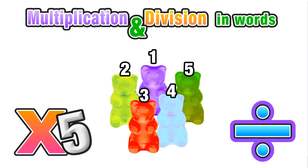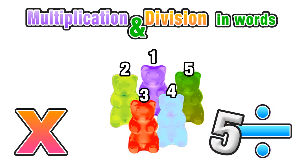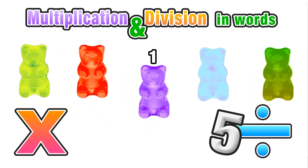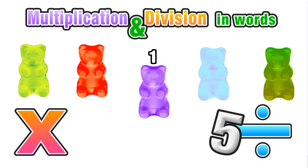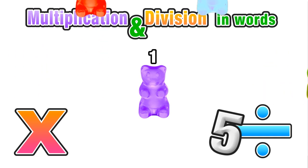Now the inverse operation would be to divide this new group of gummy bears by five, and five divided by one is just one. So those four other gummy bears are gone, and what we are left with is the one gummy bear that we started with. This example should help us understand this relationship between multiplication and division, that they are inverse operations.